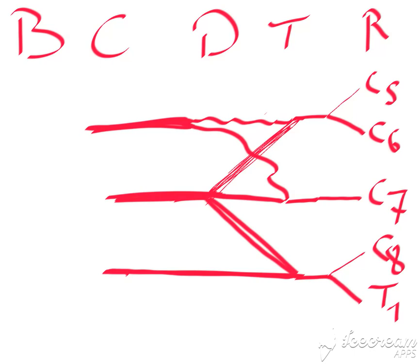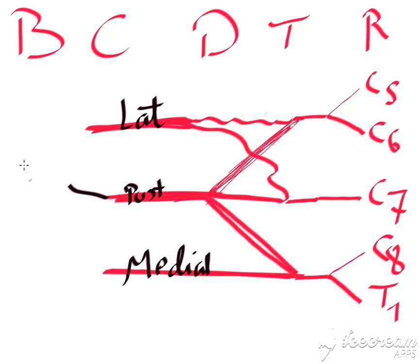Then we have branches. The posterior cord branches — this is the posterior cord — are known by the mnemonic ULNAR: Upper subscapular, Lower subscapular, Nerve to latissimus dorsi, Axillary nerve, and Radial nerve.